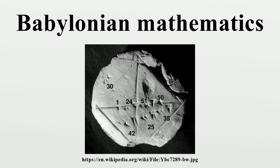In contrast to the scarcity of sources in Egyptian mathematics, our knowledge of Babylonian mathematics is derived from some 400 clay tablets unearthed since the 1850s. Written in cuneiform script, tablets were inscribed while the clay was moist, and baked hard in an oven or by the heat of the sun. The majority of recovered clay tablets date from 1800 to 1600 BCE, and cover topics that include fractions, algebra, quadratic and cubic equations and the Pythagorean theorem. The Babylonian tablet YBC 7289 gives an approximation accurate to three significant sexagesimal digits.